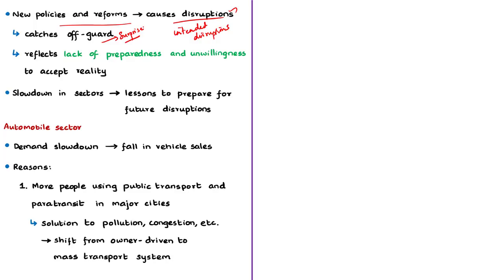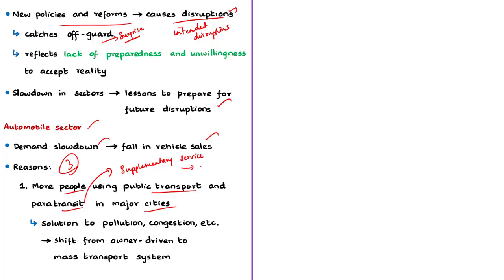The author notes that the recent temporary slowdown in some sectors may carry lessons to help India prepare for future disruptions. As an example, the automobile sector is discussed. The slowdown in automobile sector is due to a demand slowdown causing a fall in vehicle sales. The author gives three reasons. First, more people are using public transport and paratransit options in major cities. Paratransit means transportation services that supplement larger public transit systems — examples include taxi rides or auto-rickshaw rides from metro or bus stations.